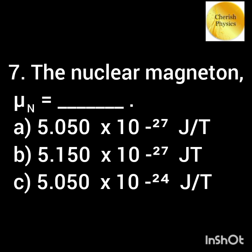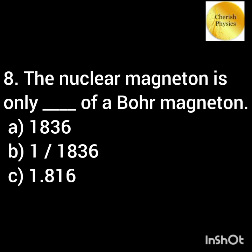The value of nuclear magneton mu-n is equal to — and the nuclear magneton is only a dash fraction of a Bohr magneton.